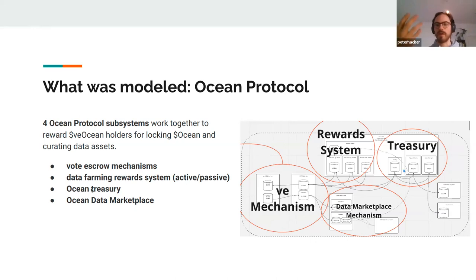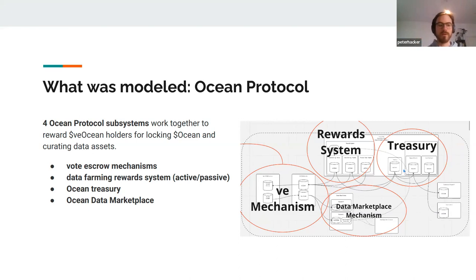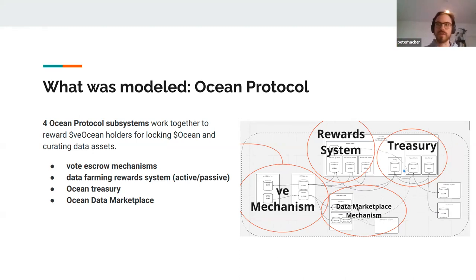Passive rewards are allocated to anyone passively holding their vote escrow tokens. Active rewards go to users who vote with their vote escrow tokens — called data curation in Ocean — signaling which data assets you think are highest quality or will be consumed most. The Ocean treasury funds the reward system according to a defined distribution schedule. Data consumption volume is an input into calculating the active reward.